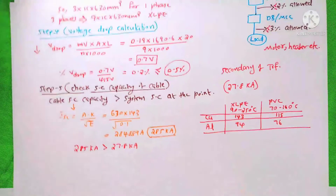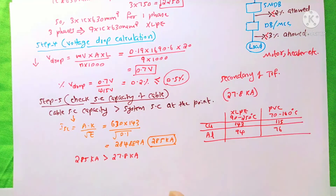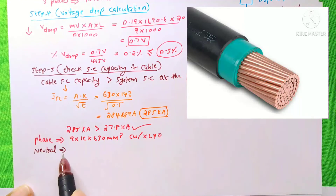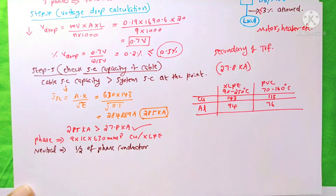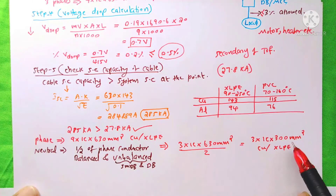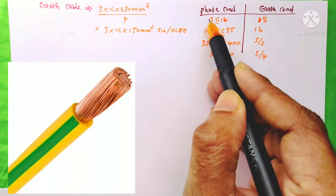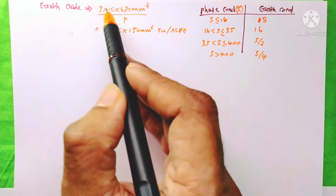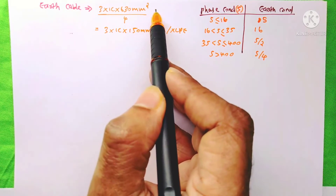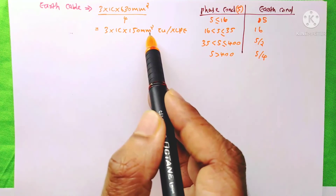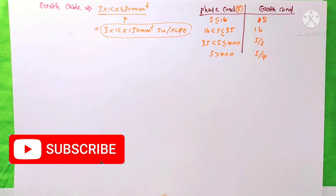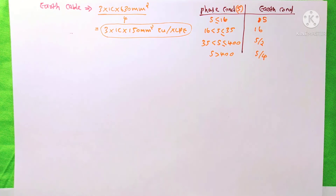Therefore, 9 runs of 1-core 630 mm² XLPE copper cable are suitable for our system. For the neutral cable of the MDB, we use half the phase conductor: 3 × 1-core 300 mm² copper XLPE. For the earth cable, since 630 mm² > 400 mm², the earth conductor is 3 × 1-core 150 mm² copper XLPE cable. Please subscribe to the YouTube channel. Thanks for watching.